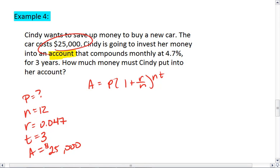Now we have all our variables. We can plug them into the equation. We get $25,000 equals P times 1 plus 0.047 over 12 to the 12 times 3. Again, be careful about your order of operations.